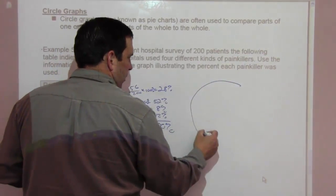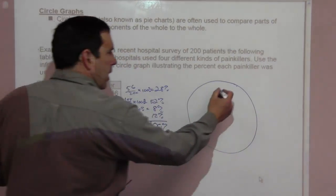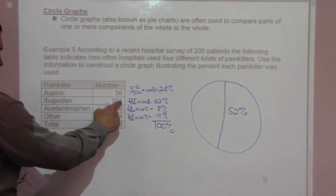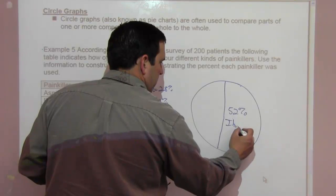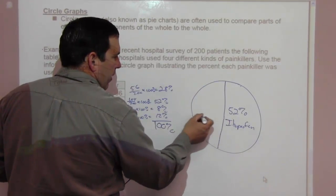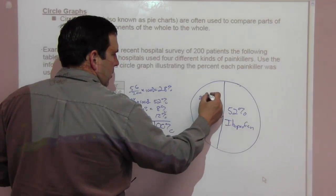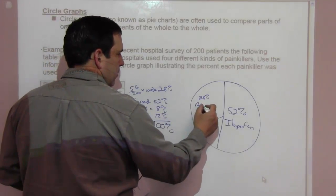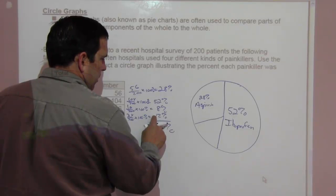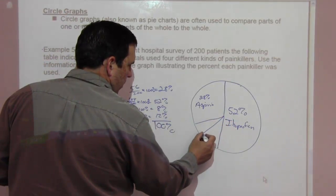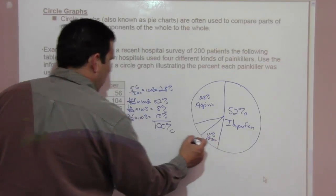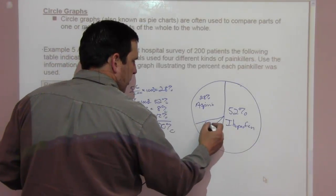So, give this circle. Free handed circle. Let's go with the biggest one. 52%. That's a little more than half. Come along here, go a little bit that way. Here's our 52% and that was ibuprofen. Next one is 28%. That's a little more than a quarter. So, a quarter would be 25%. So, we're going to come up like this. 28% was aspirin. Then we have 12% and 8%. So, what's left of this? What about that? 12%. 12% was other.